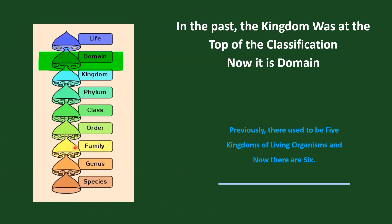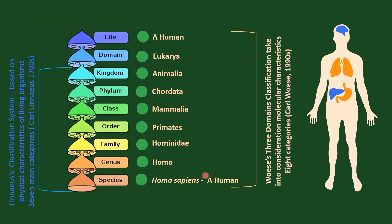We talked earlier that in the past, five kingdoms were at the top of the classification. Now, three domains are on top, adding one more kingdom — previously five kingdoms, now six. We will discuss this living organism classification from species to domain in other lectures. You can see here the order from species to living organisms. The human species name is Homo sapiens, genus Homo, family Hominidae, order Primates, to domain Eukarya. It is essential to mention that Linnaeus's classification system was based on physical characteristics and led to seven main classification categories, developed in the 1700s and followed for a long time. The modern system proposed in the 1990s by Carl Woese considers molecular characteristics and adds one more category — the domain — at the top of the classification hierarchy.